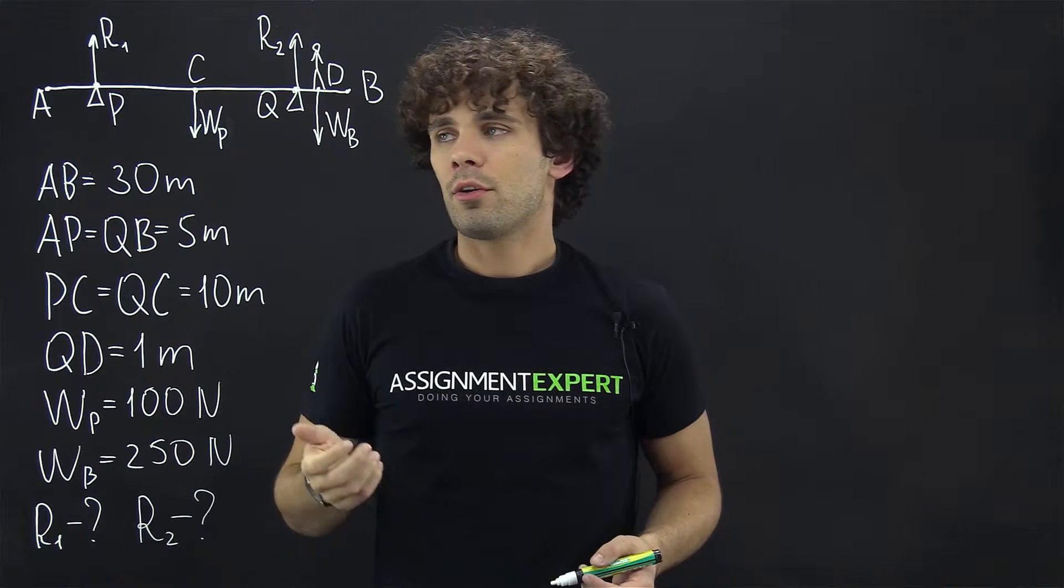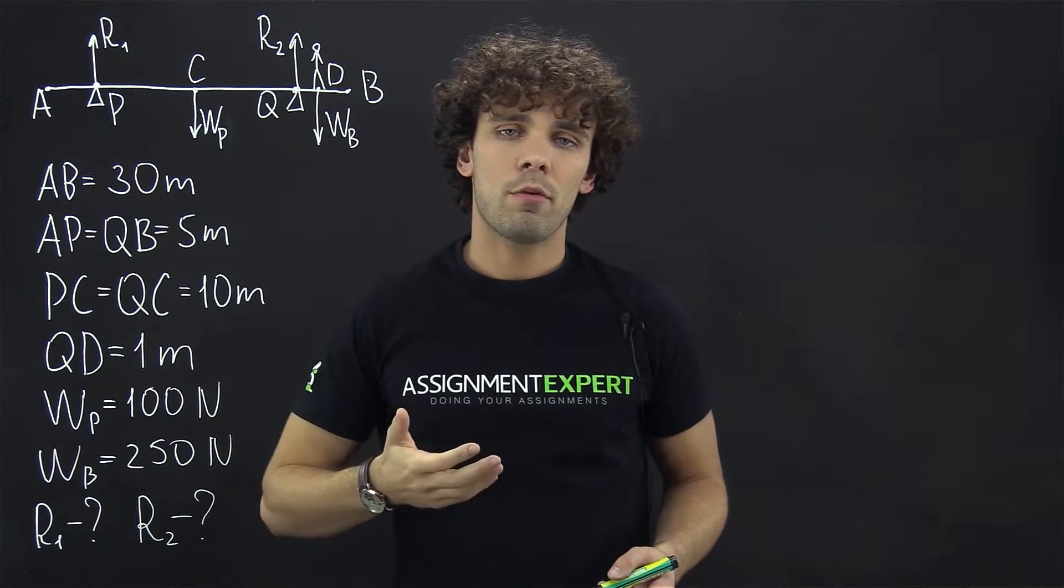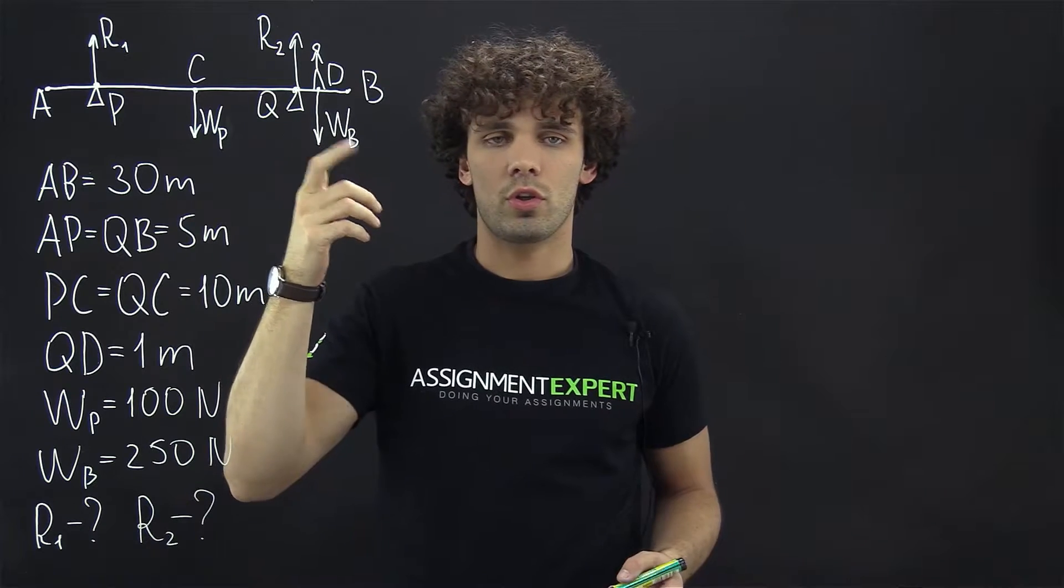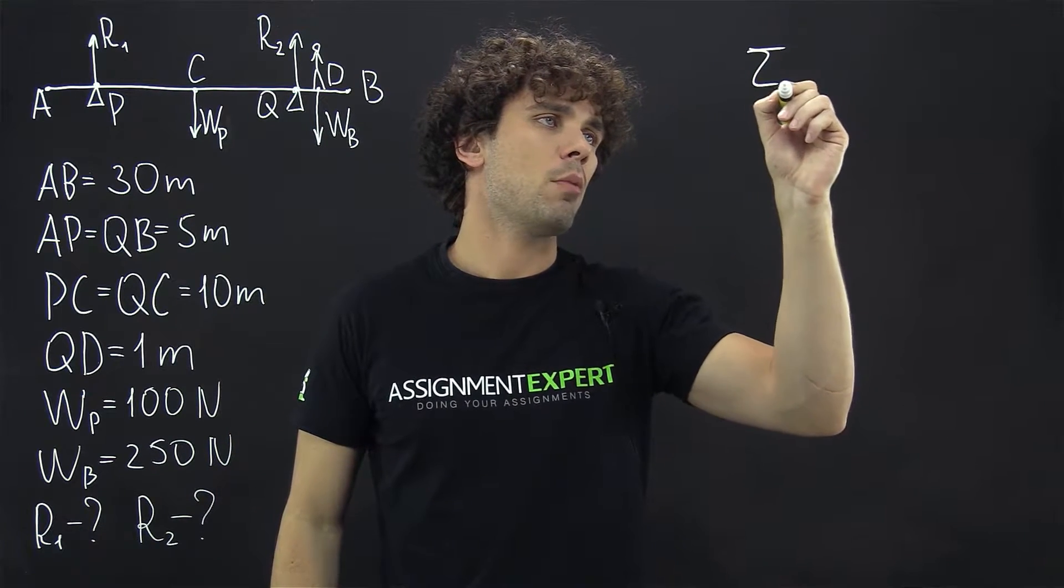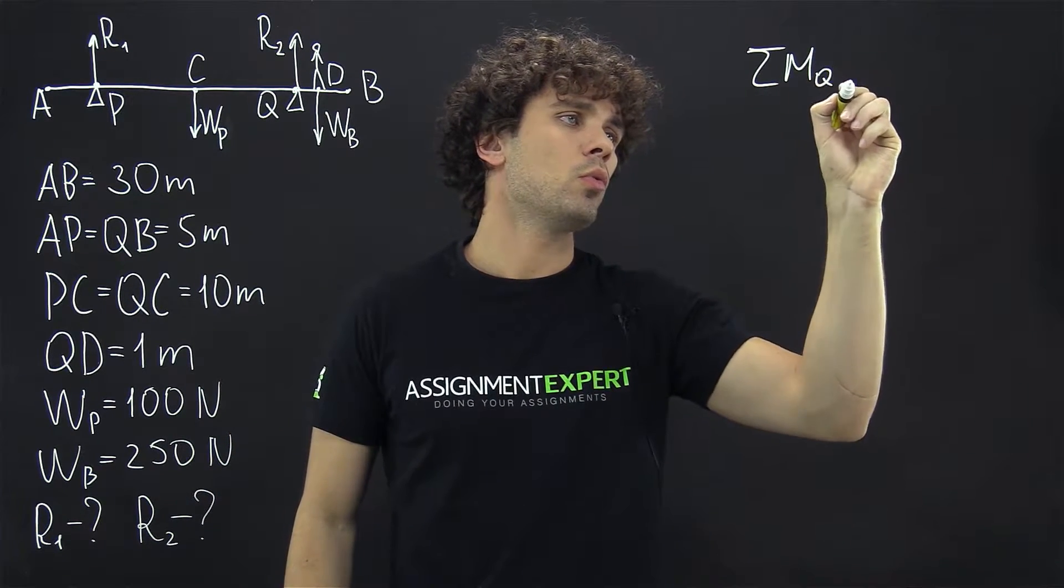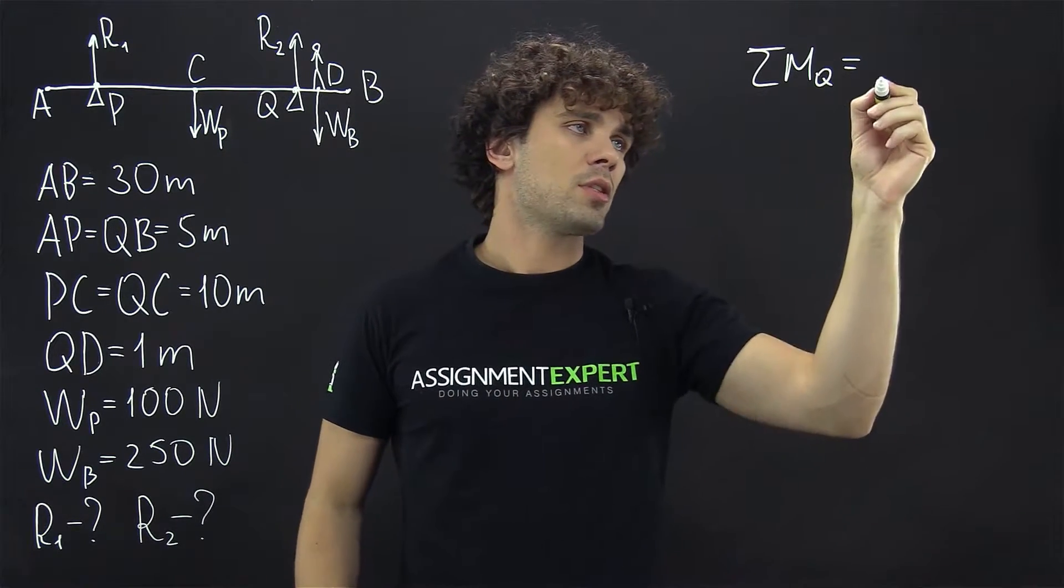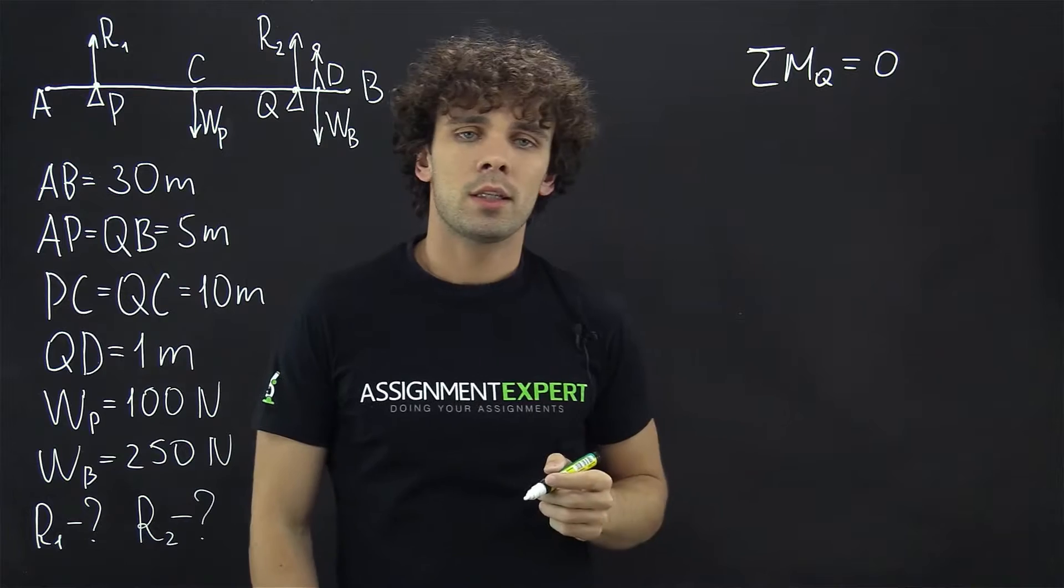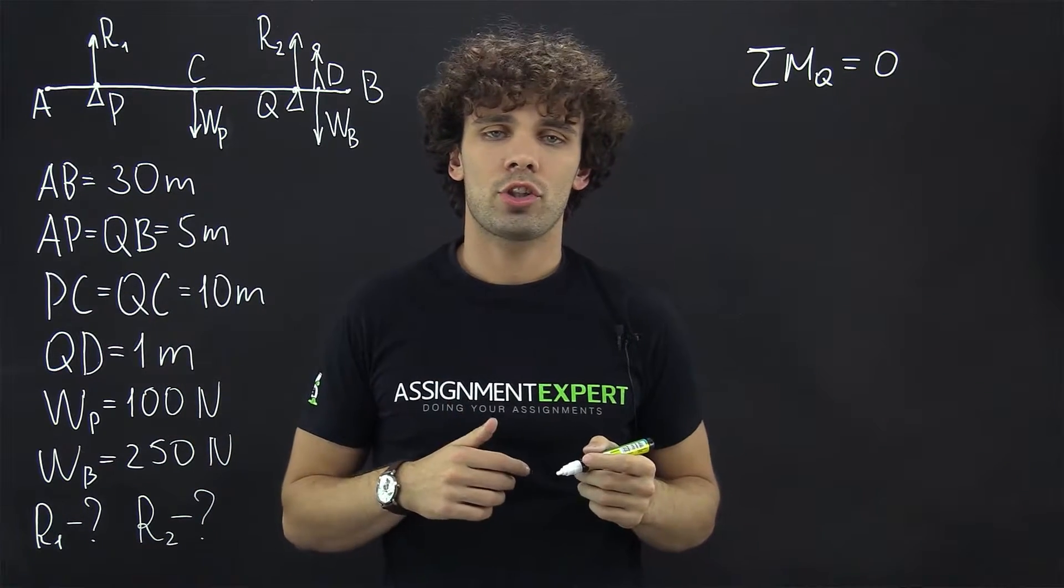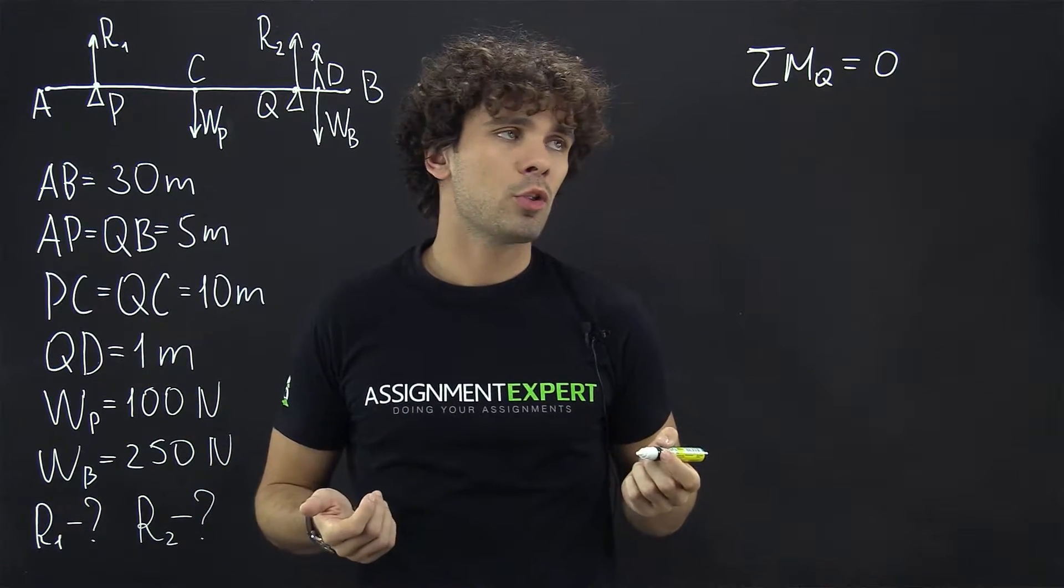To find the reaction force R1, we need to consider the sum of moments of forces around point Q. So we have the sum of moments at point Q, and since our setup is in equilibrium, this sum is equal to 0. Now let's take the clockwise direction as a positive direction. What do we have?